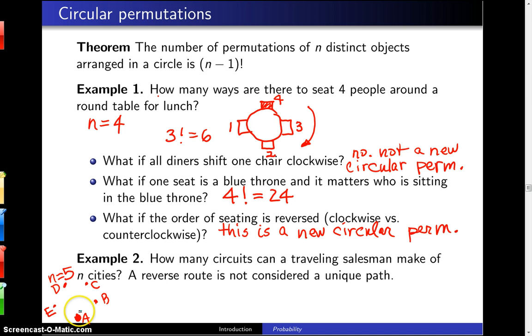And one possible route might be to go from C to D to B to E and then back to A. That would be one possible route.